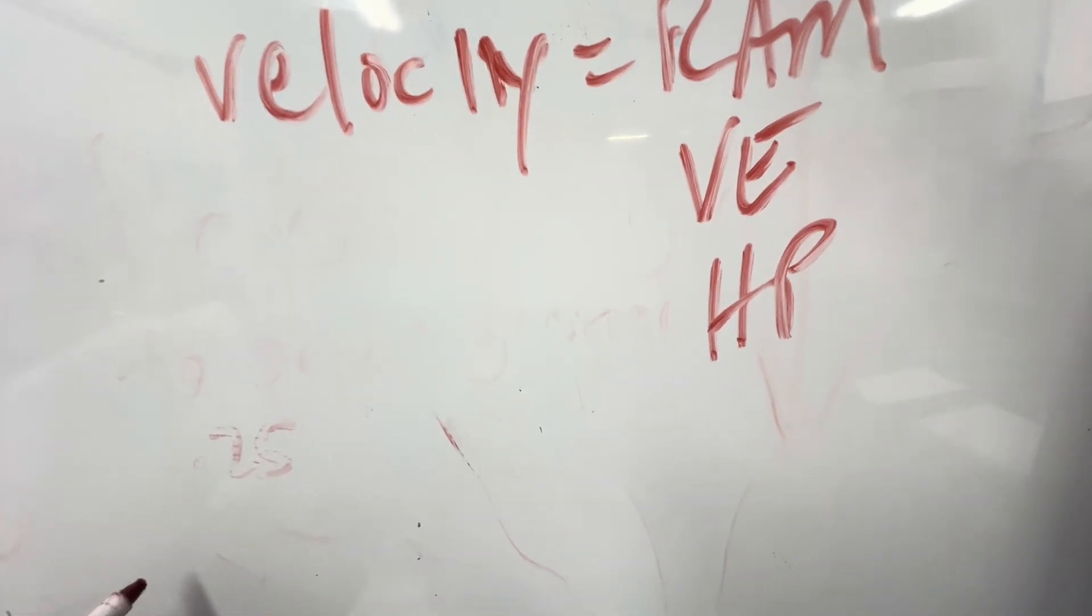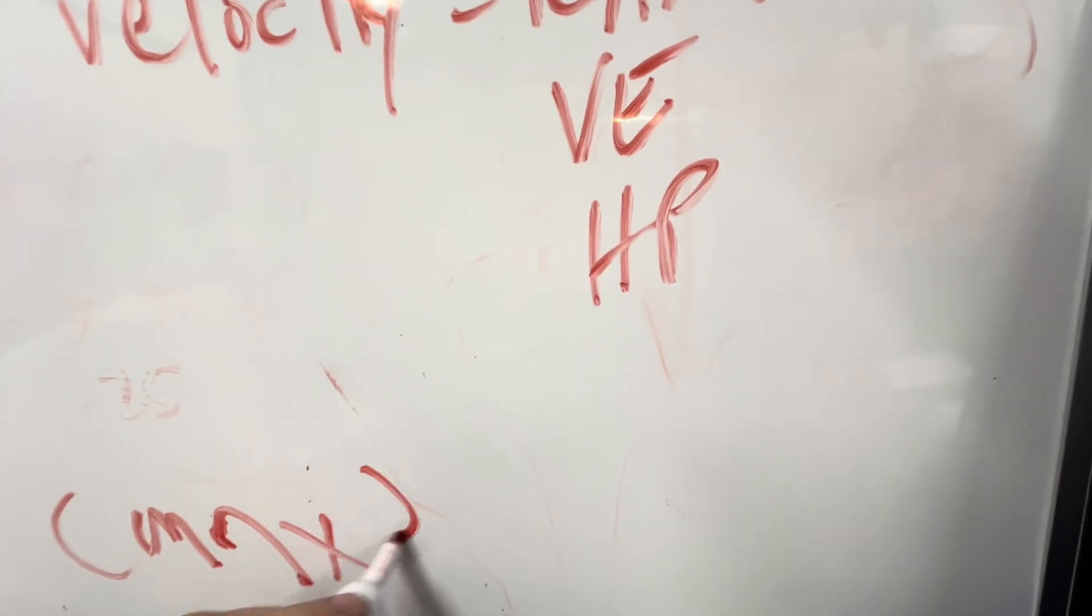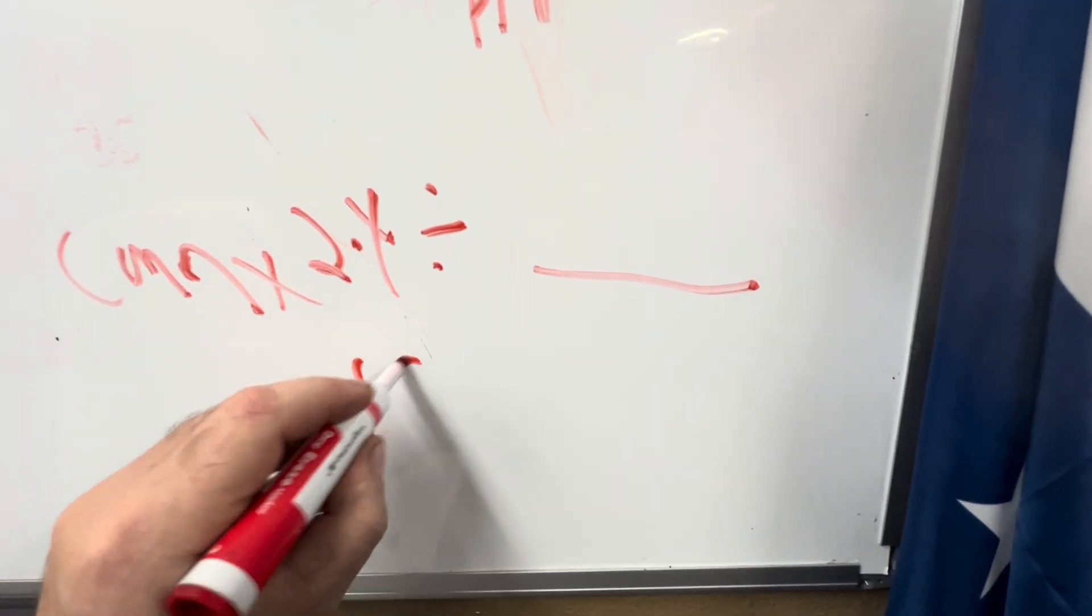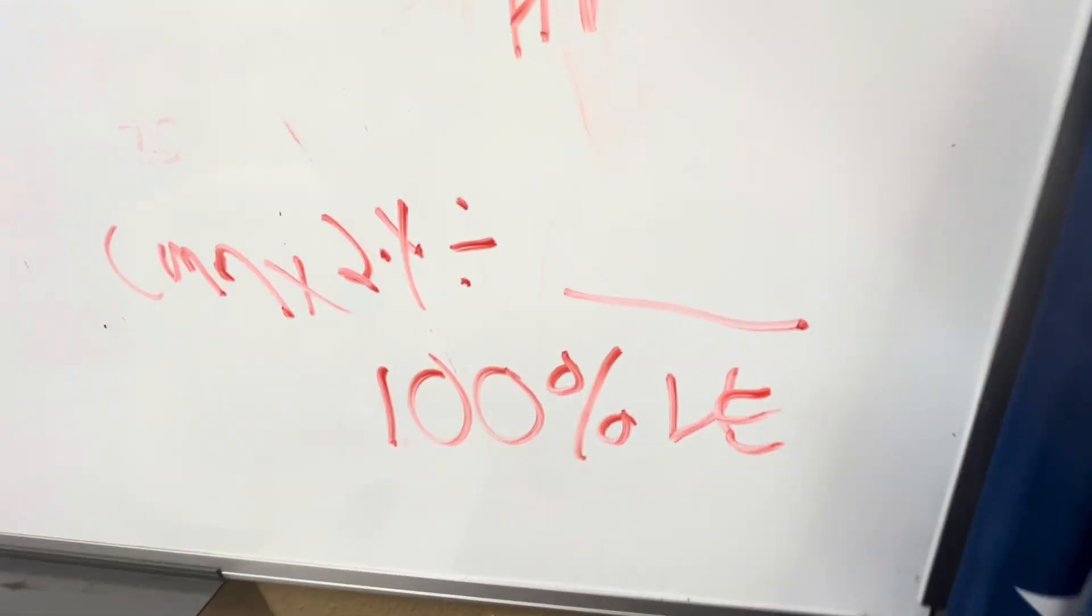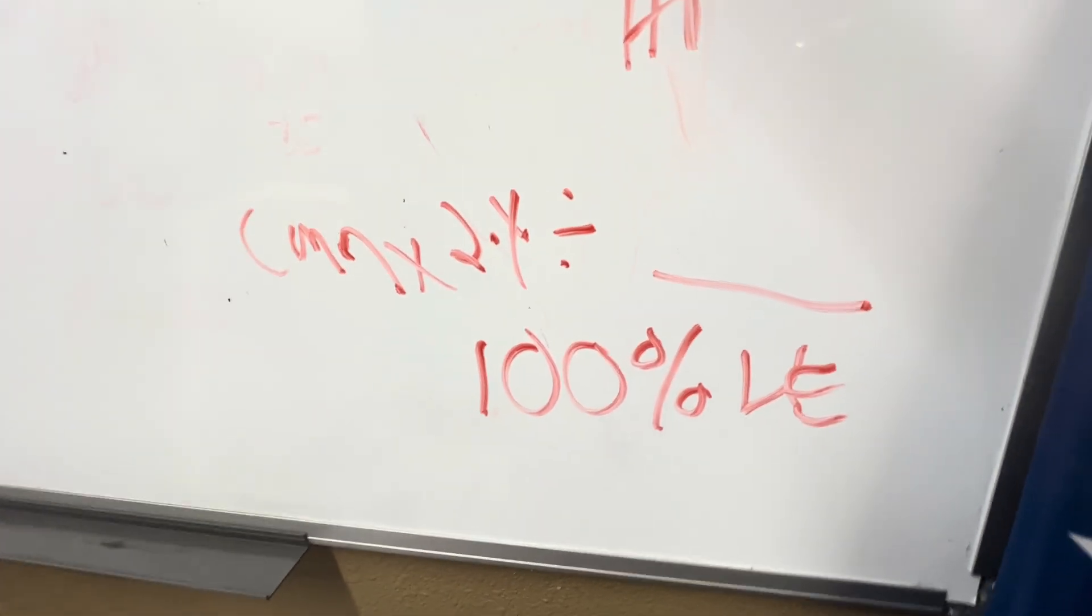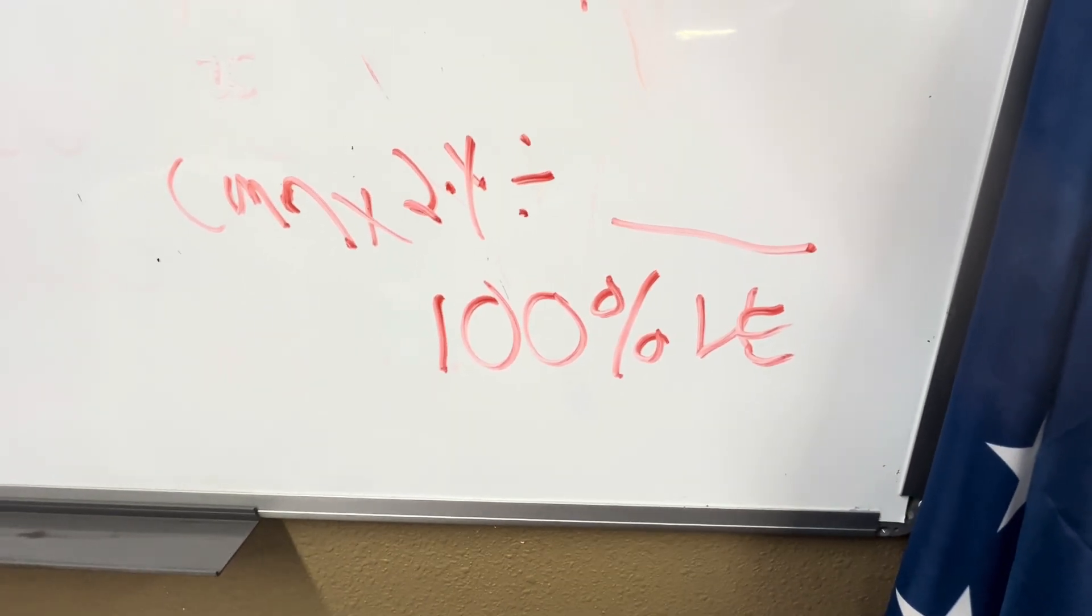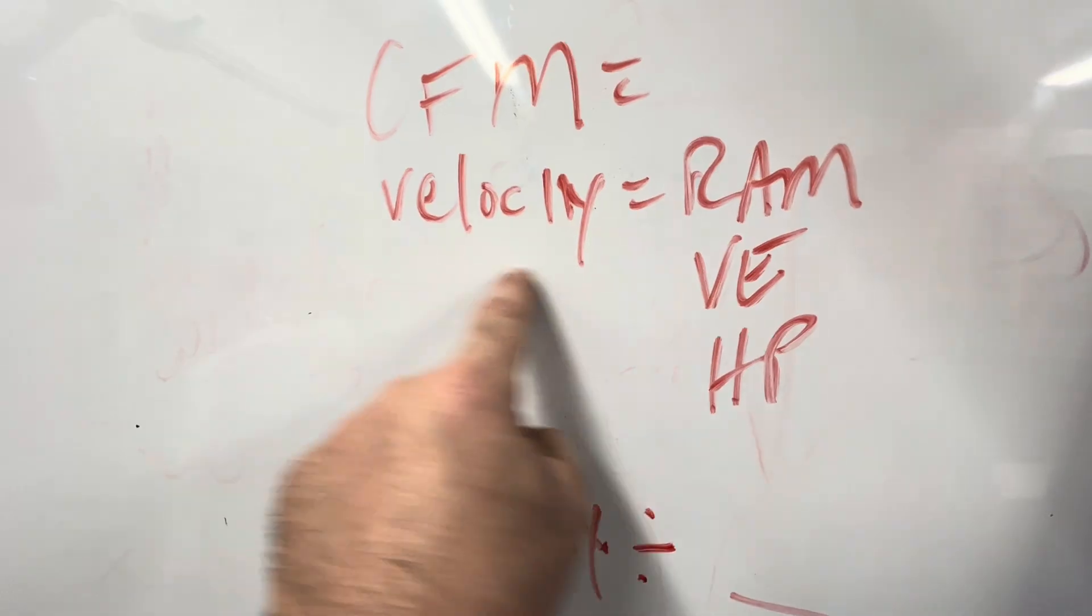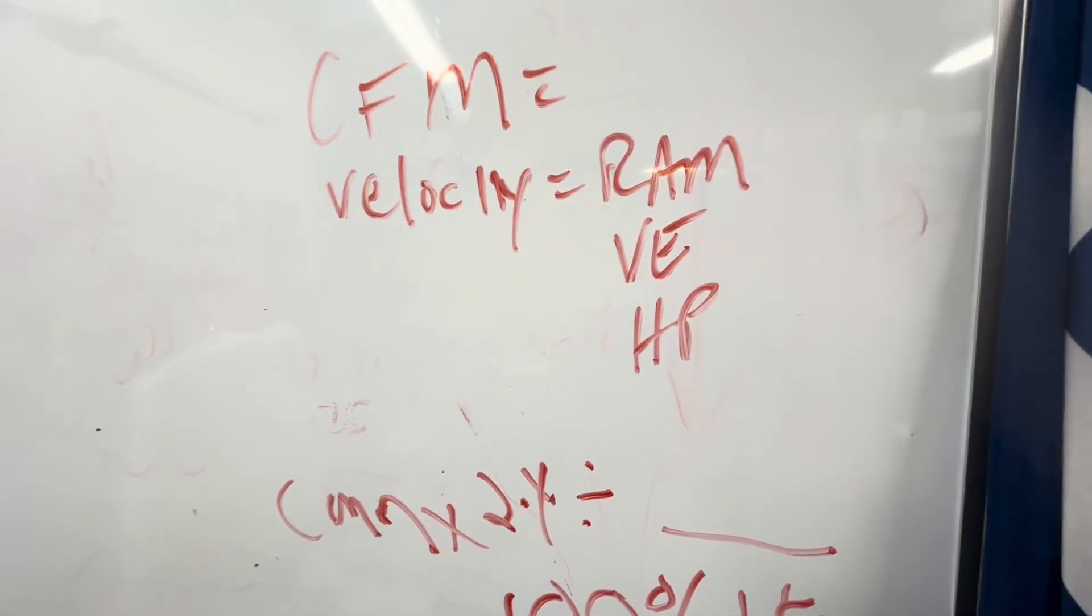You have a formula that says, CFM times 2.4 divided by that equals this. That's a 100% VE, guys. What do you do if you want to make more power than that and you want to make 2.5 horsepower of a cubic inch? You can't use a VE of a hundred percent. It needs to be more than that. It's a little off subject a little bit, but you get the point.